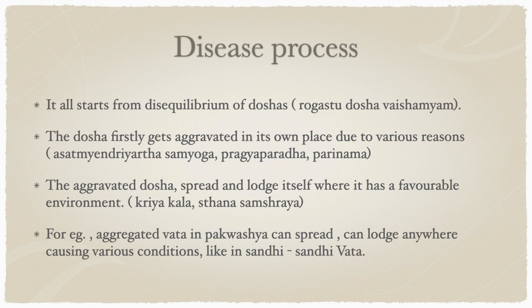Similarly, a person who has injured his back — where the back is weak — this aggravated vata will go and lodge in the low back and cause low back pain. The doshas which are aggravating can lodge in the place where they find it suitable, and that is why we say there is a problem of that particular organ. This weakness may have been developing over many weeks, months, years, or even previous birth due to constant abuse from ahita ahara and vihara.